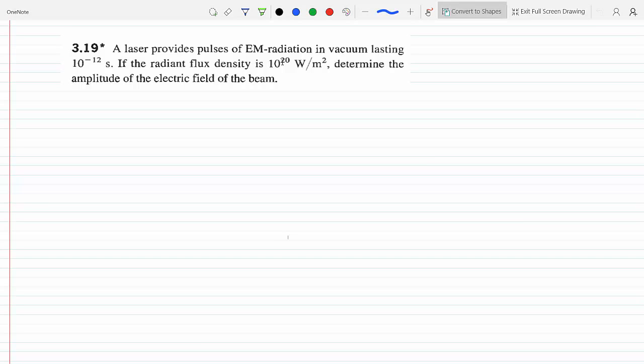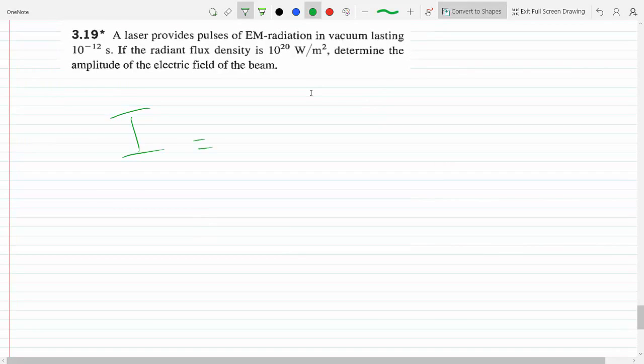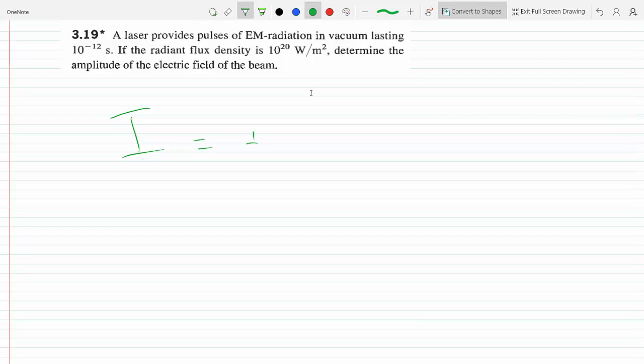Or the energy flux. So we use the same exact equation we used last time. It's a similar problem, so not bad at all. I is one half C epsilon naught magnitude of the electric field squared.